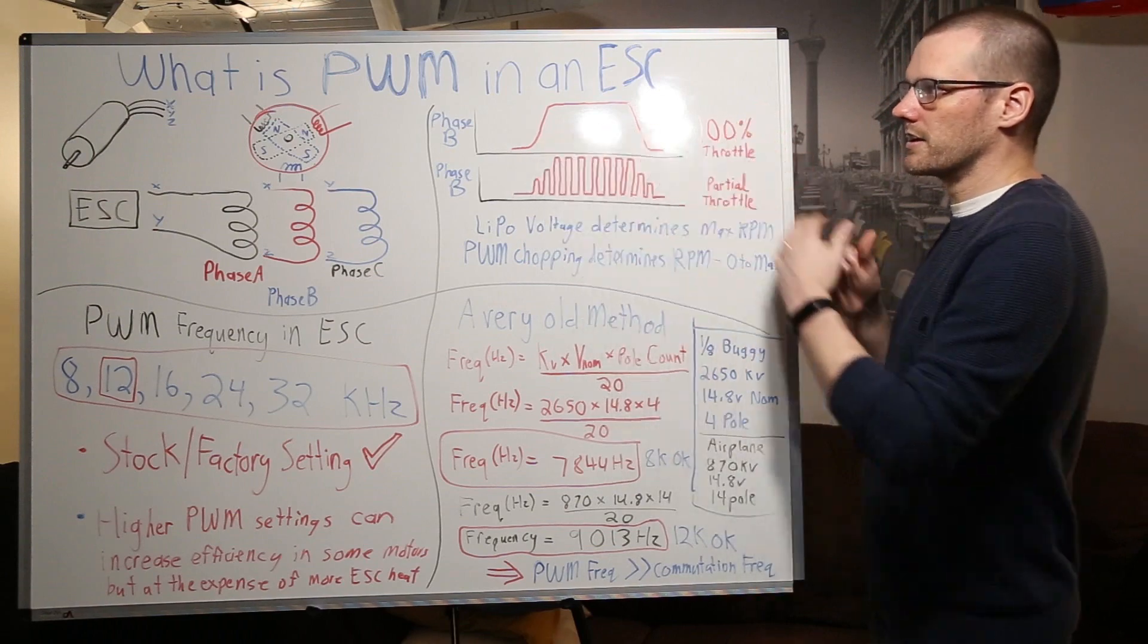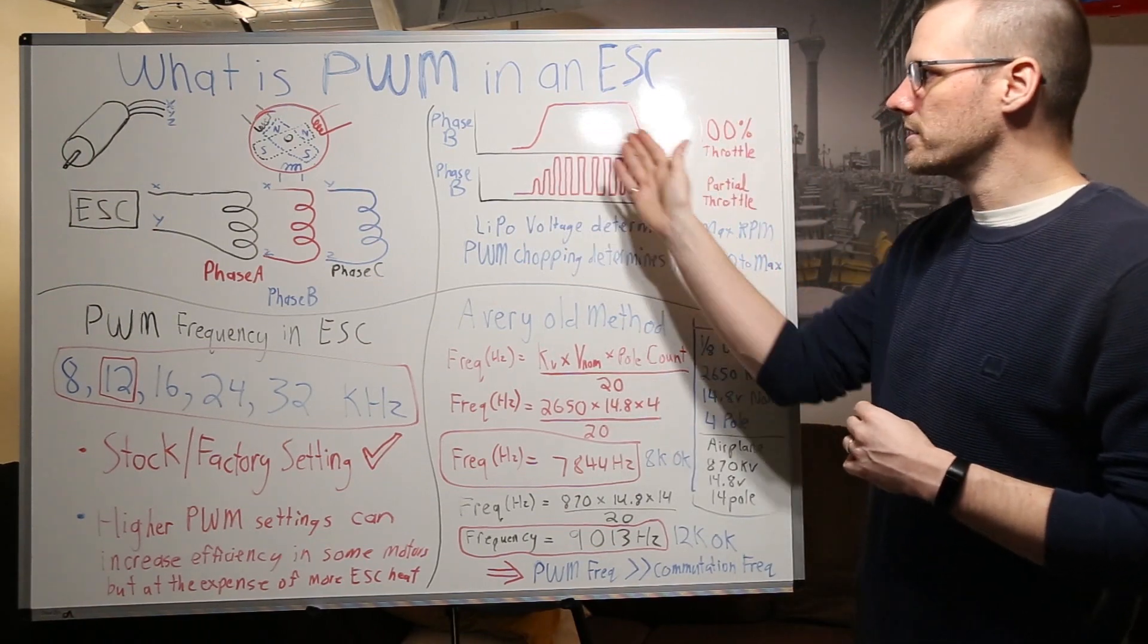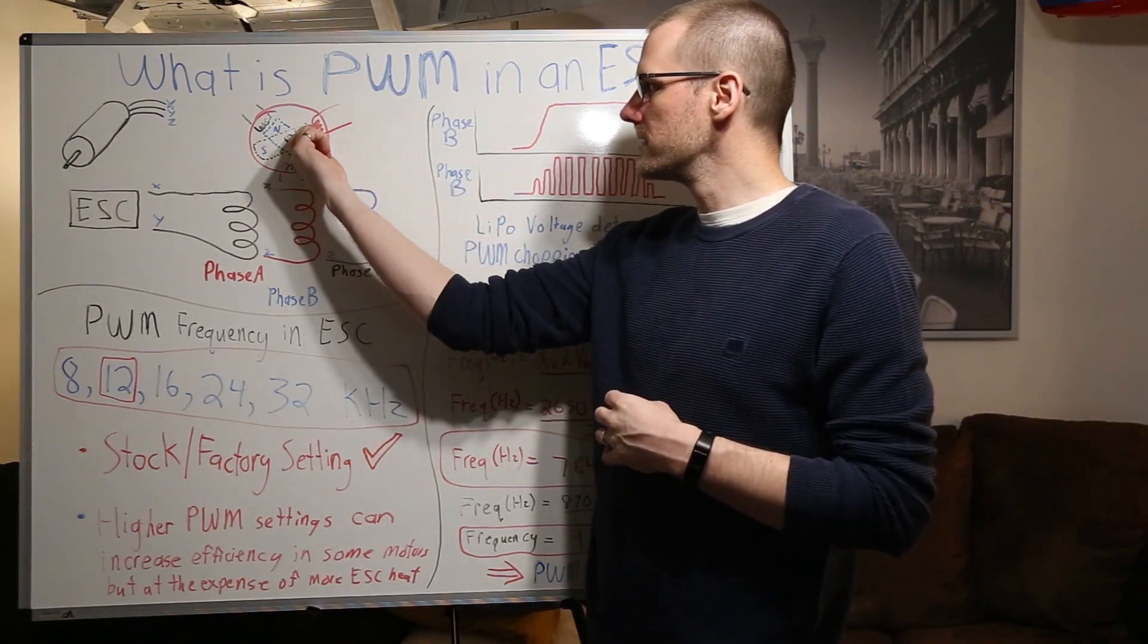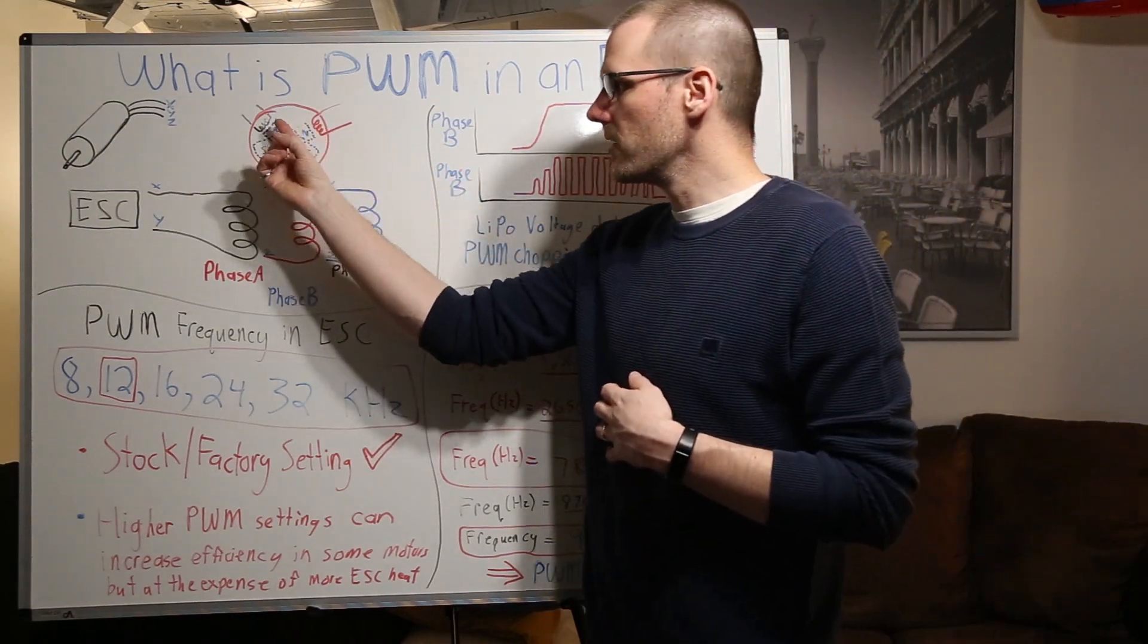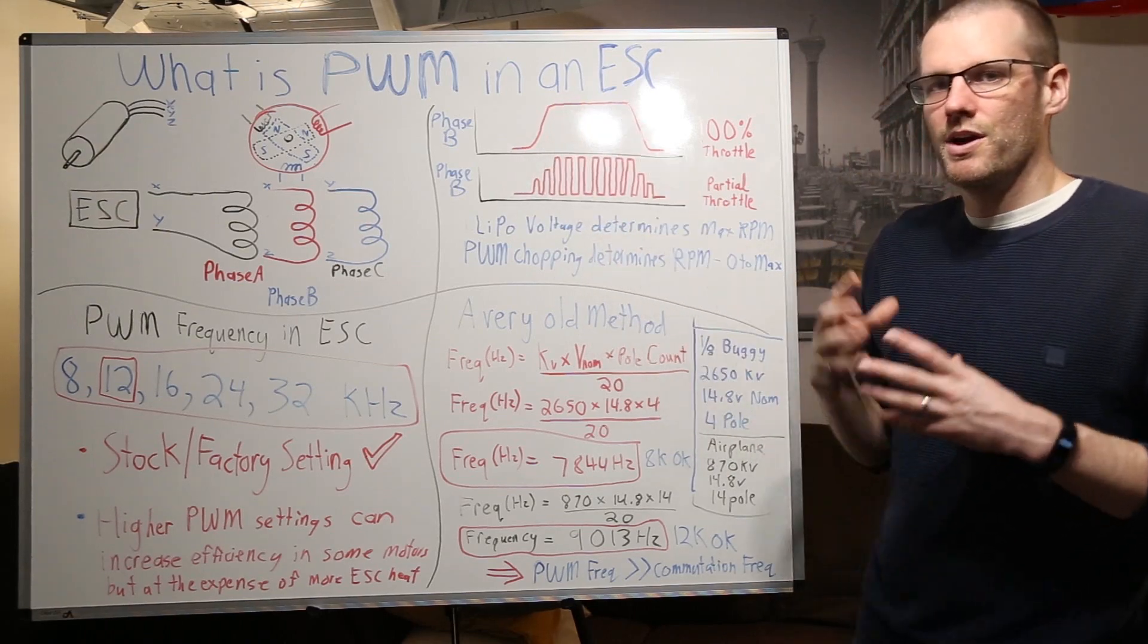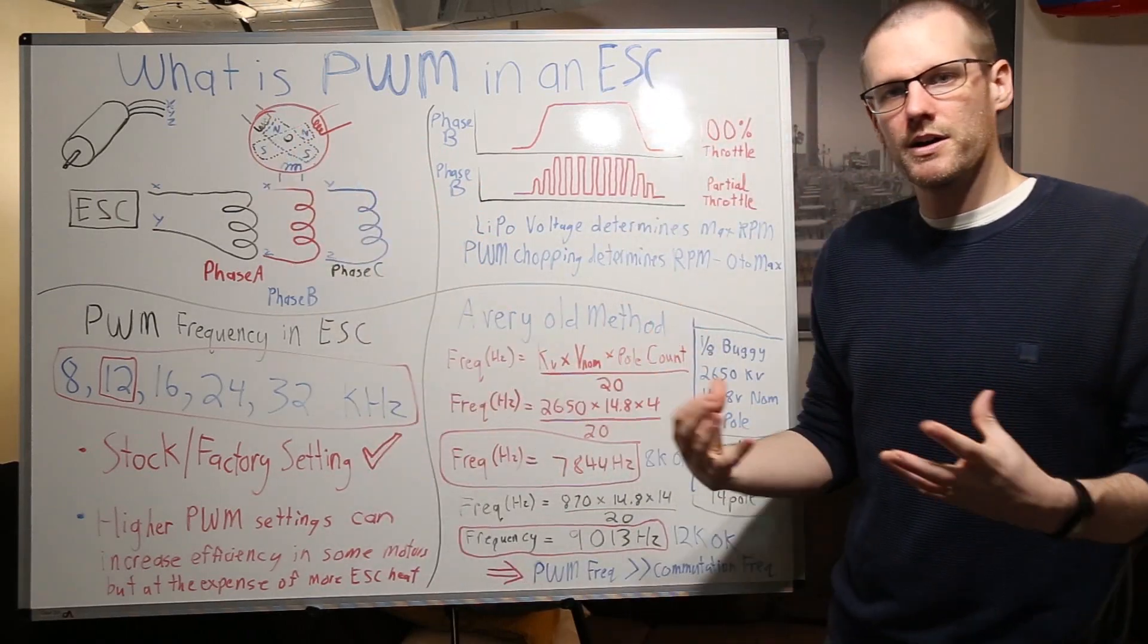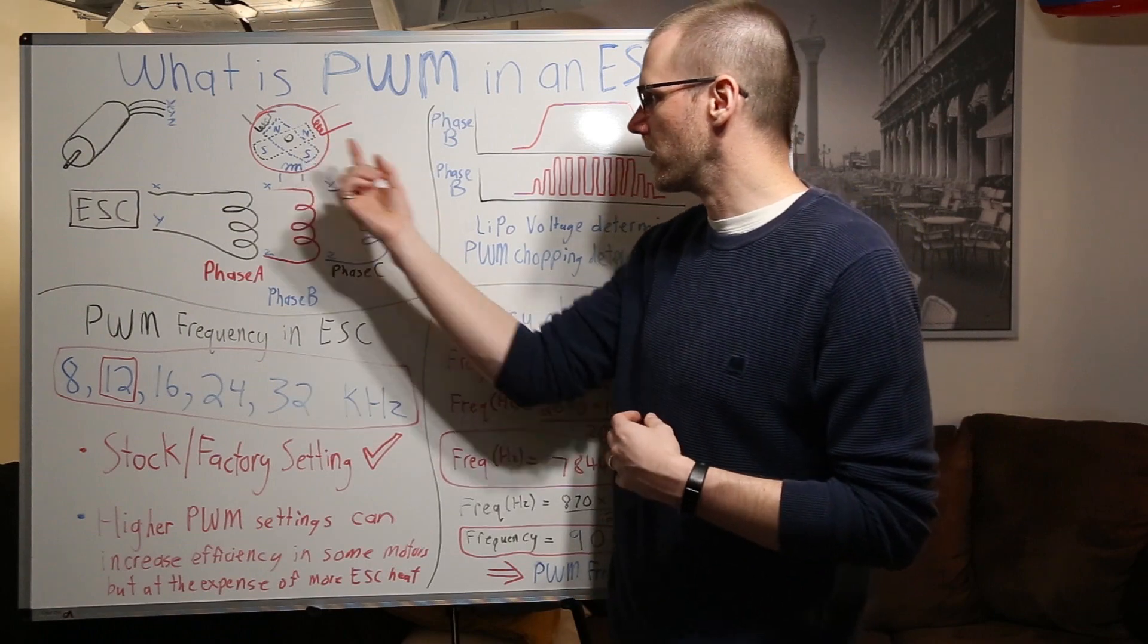So at 100% throttle we're looking at this diagram. What this diagram represents is our north pole is coming right by phase B. We want to turn phase B on to repel it and once it's gone we want to turn it off because it's no longer needed. So we go ahead we turn it on and then we turn it off. Now this is under 100% throttle. We want maximum force for as long as possible or as long as needed is really what we're looking for here.